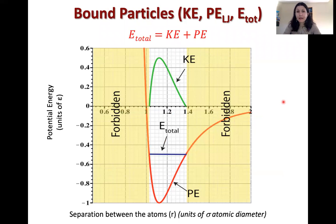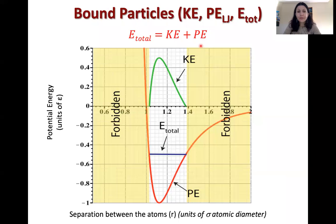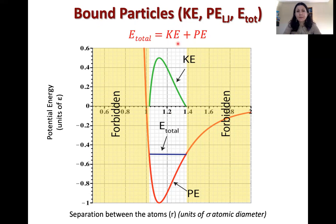Now let's think about kinetic energy. We can define total energy for a closed system — no outside source of energy — as the sum of kinetic and potential energy. For a given pair of particles, assume the total energy is minus 0.5 epsilon. If we know the total energy and what the potential energy looks like at all separations, we can get the kinetic energy by subtracting the potential energy from the total energy.